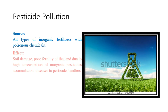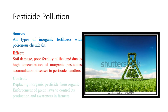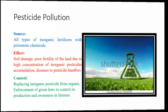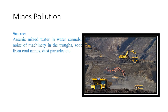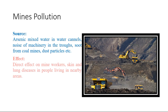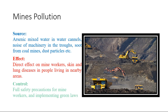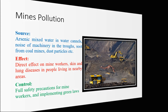Pesticide pollution is caused by inorganic pesticides and can be controlled by replacing inorganic pesticides with organic ones. Mines pollution is caused by arsenic-mixed water in canals, noise of machinery, soot from coal mines, and dust particles. It can be controlled by practicing safety precautions for mine workers.